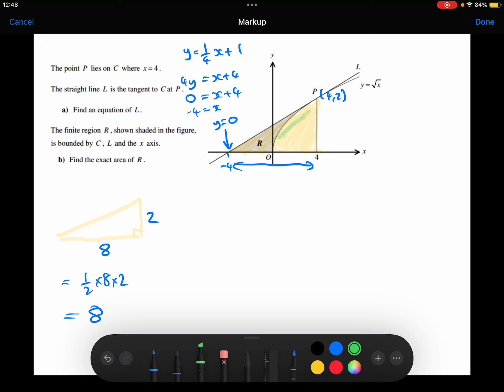Now to work out the area underneath this curve. The way I'm going to do that is I'm going to be integrating from 0 to 4 the curve, which is the square root of x, or x to the power of 1 half.